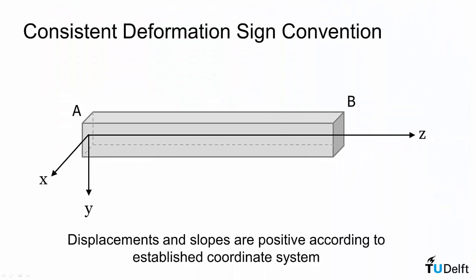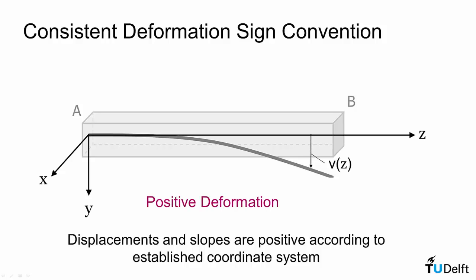If we then look at what it means for deformations, y is positive downwards, so then our deformation will be positive downwards as well. And a positive slope will be a slope that increases the rate of the deformation in a downwards direction.